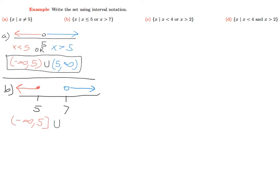we use the union symbol again, and now we exclude 7 with an open parenthesis and go out to positive infinity. Here would be our interval notation for the set in B.